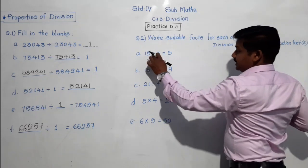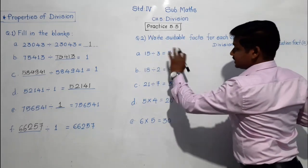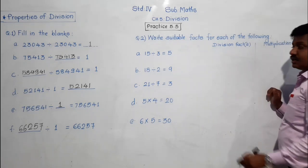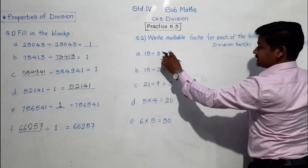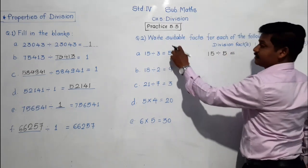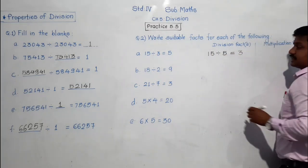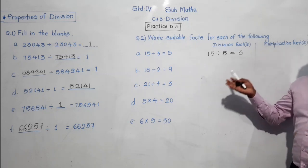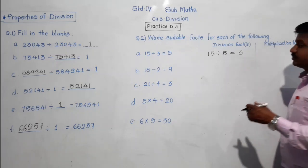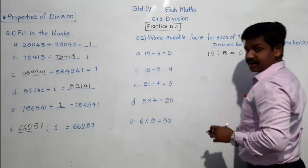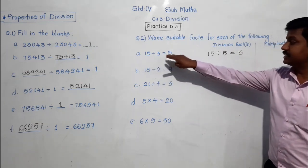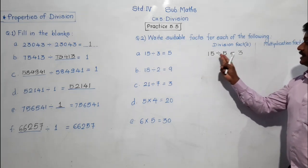For 15 divided by 3 equals 5: we can write another division fact by interchanging the quotient and divisor. So 15 divided by 5 equals 3. We just interchange the quotient and divisor — 5 goes where 3 was, and 3 goes where 5 was — while 15 stays in its place. So 15 divided by 3 equals 5, and in another way: 15 divided by 5 equals 3.